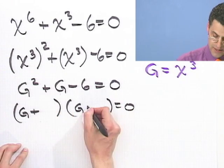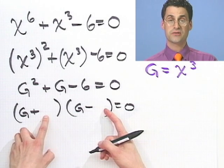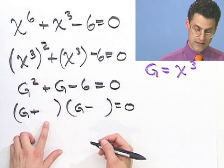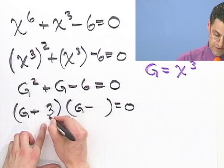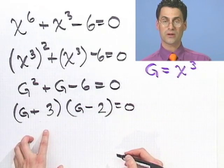So I'd see a plus and a minus. Two numbers whose product is negative 6, but combined nicely to give plus 1. So plus 3 and minus 2 work.